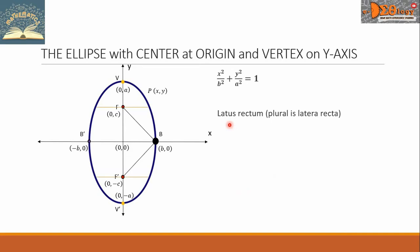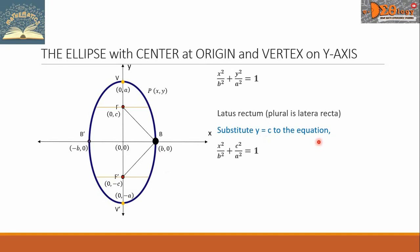Now, for the latus rectum, we have 2 latera recta here. To find the coordinates of the endpoints of the latus rectum respectively, we substitute y = c into the equation. The y² is now changed into c². By the Pythagorean theorem, c² = a² - b², so we replace c² with a² - b².